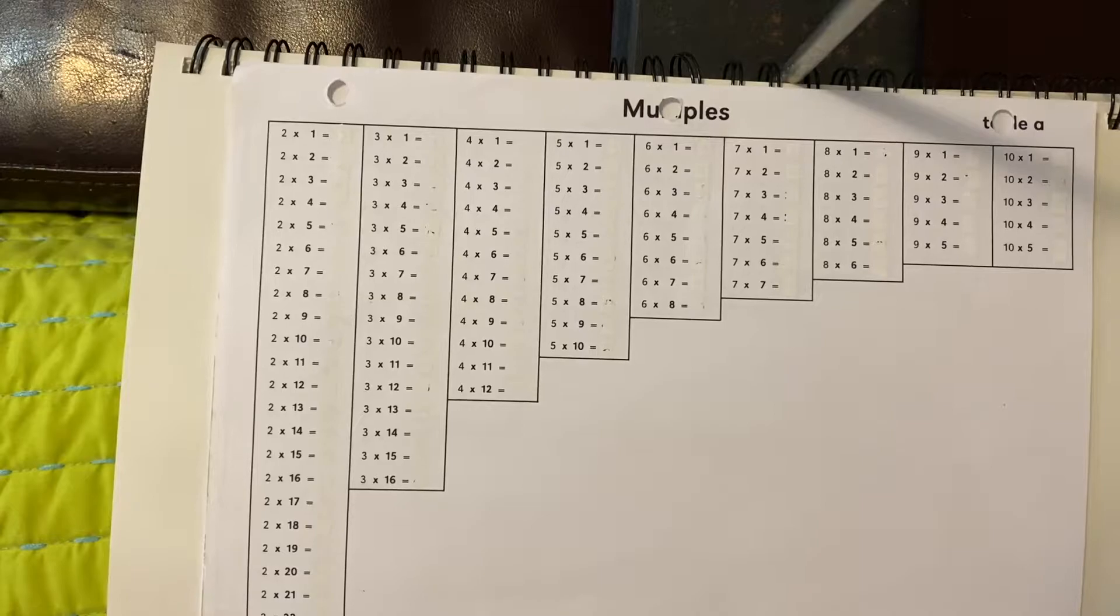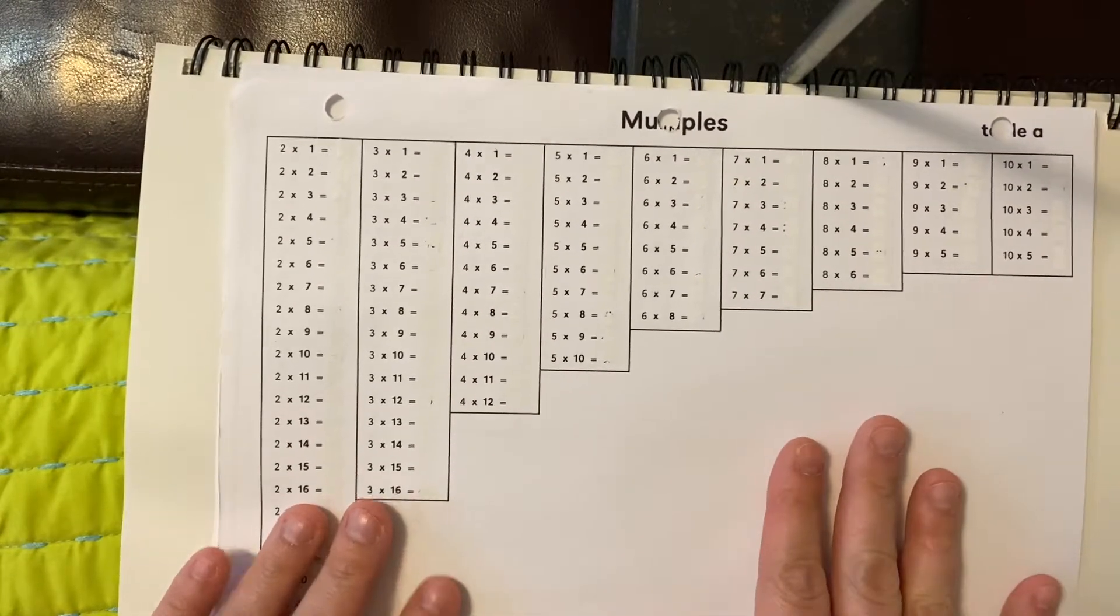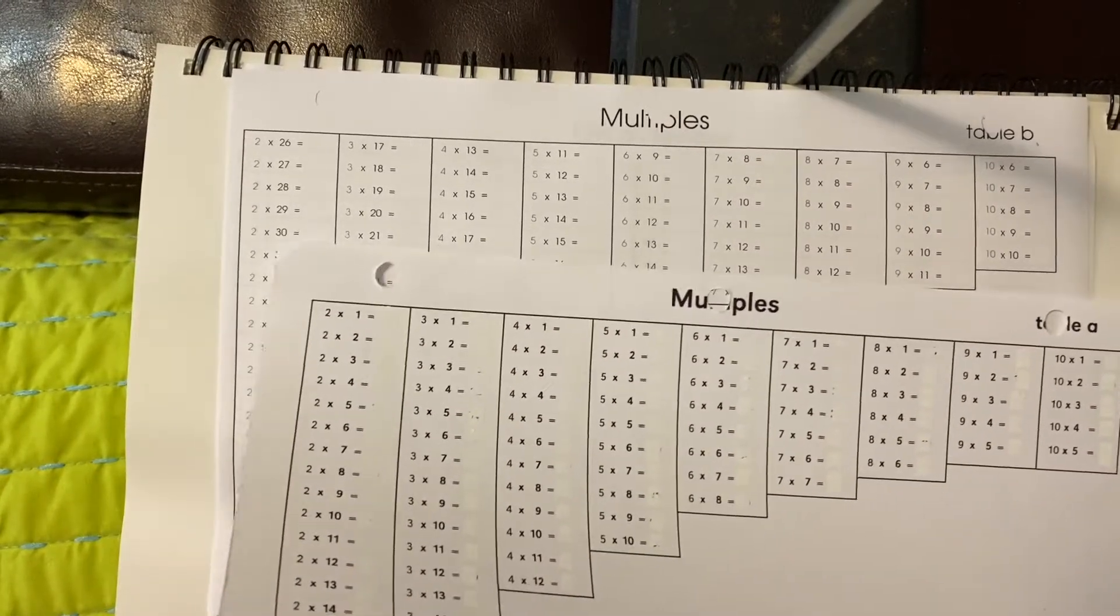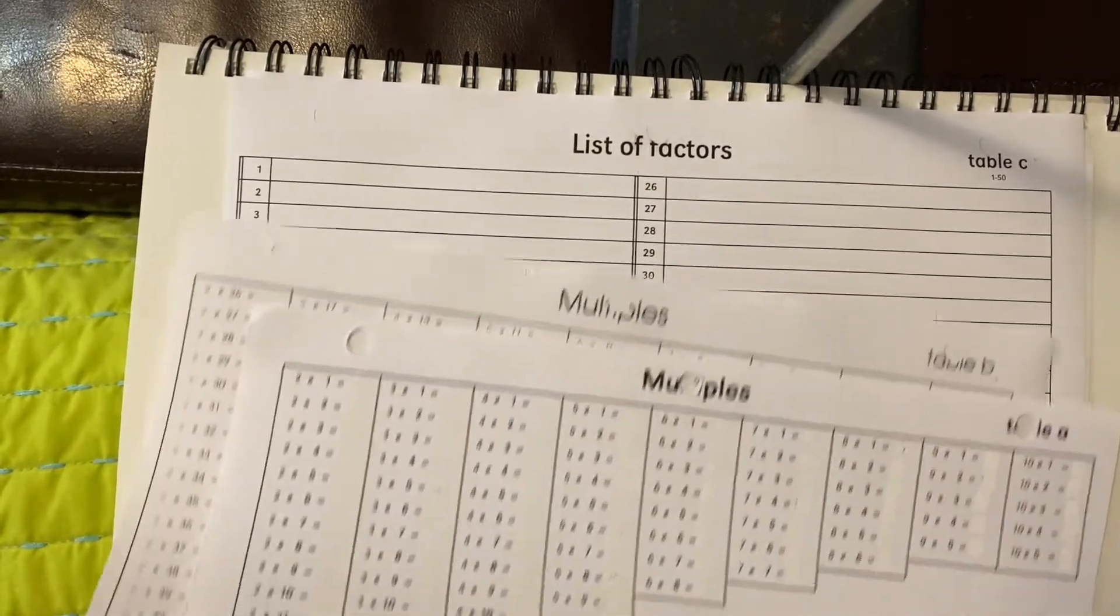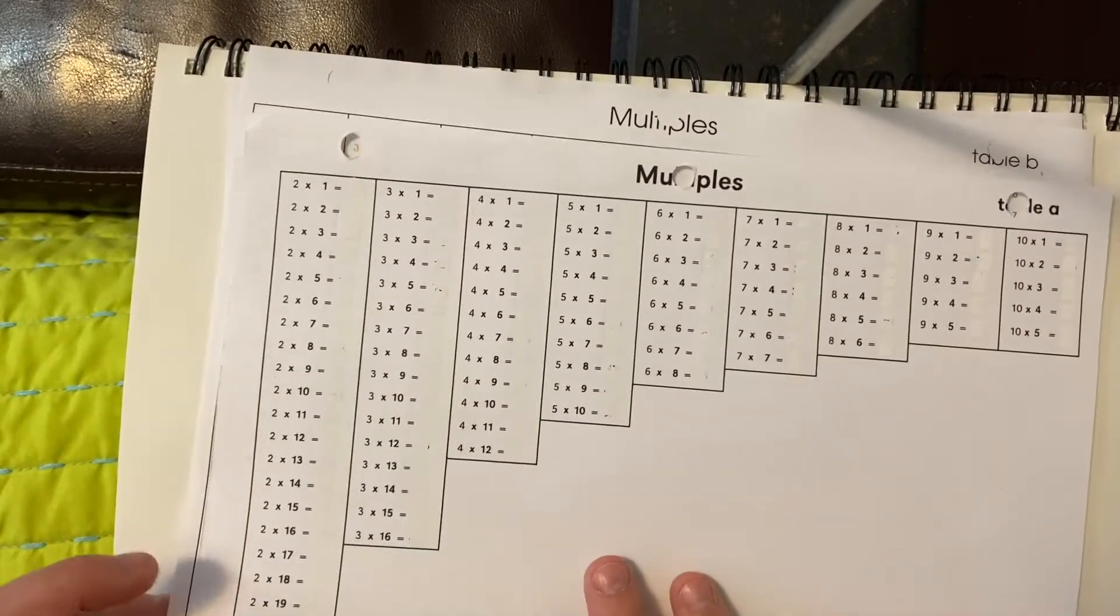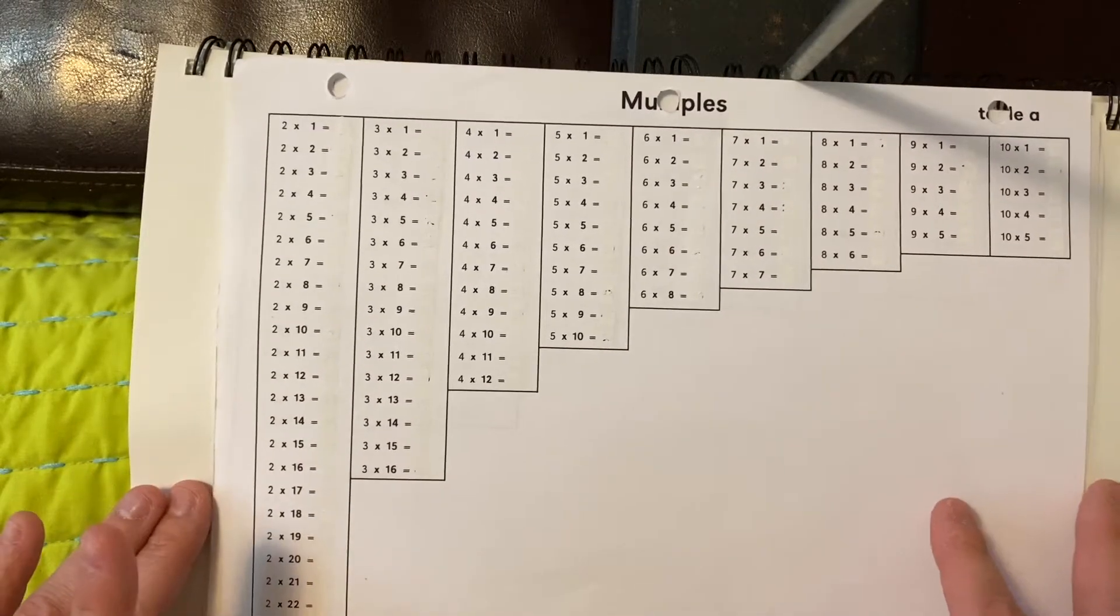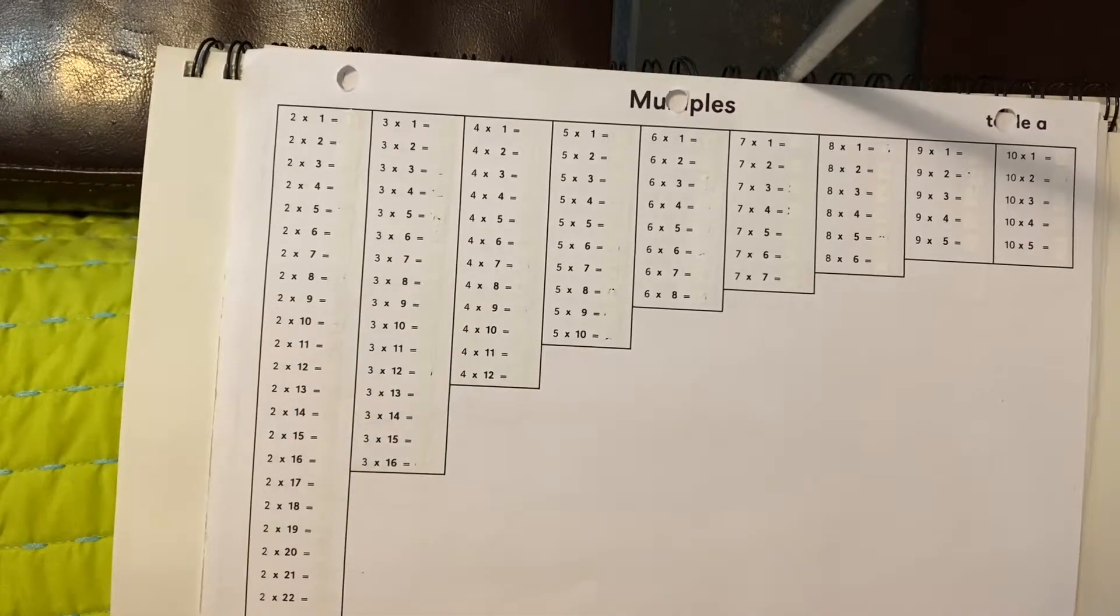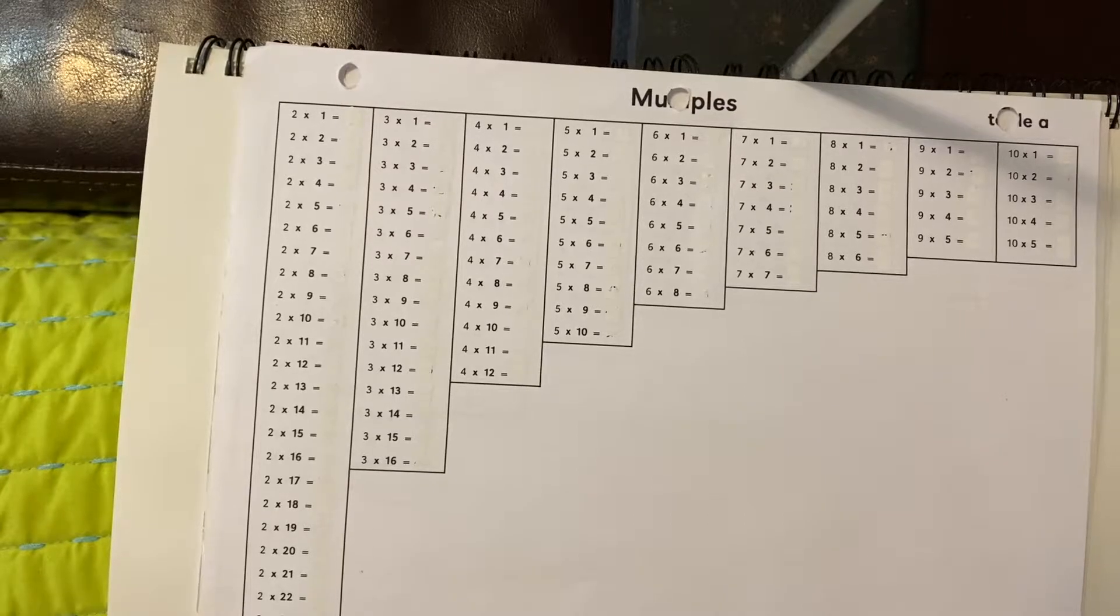We are going to be looking at three different things today: table A, table B, and table C. The first two are lists of multiples. You're going to want to start with table A, especially if you don't have one at home right now.